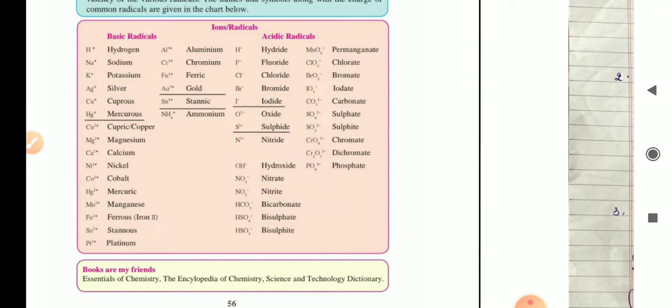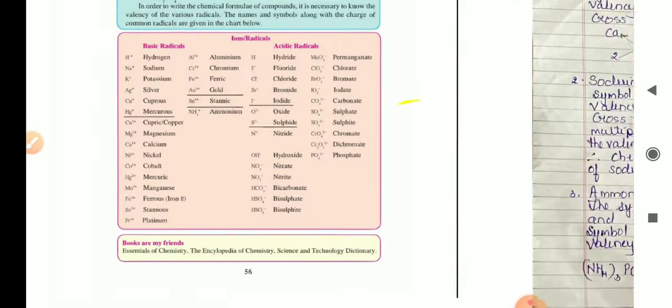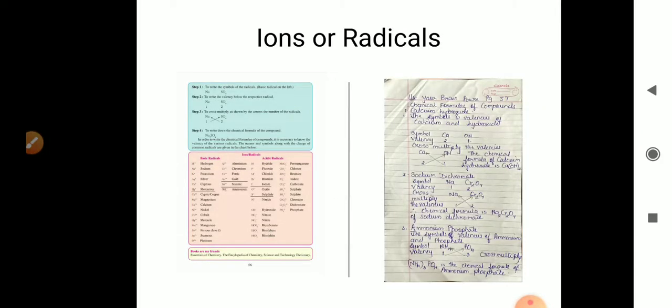Using the chart of ions or radicals and the cross multiplication method, write the chemical formula of the following compounds: calcium carbonate, sodium carbonate, silver chloride, calcium hydroxide, magnesium oxide, ammonium phosphate, cuprous bromide, copper sulfate, potassium nitrate, sodium dichromate.